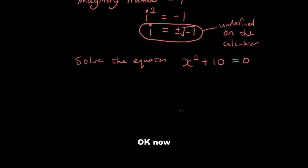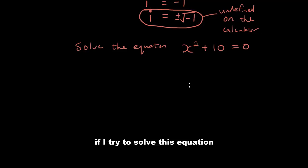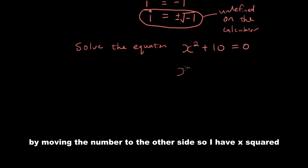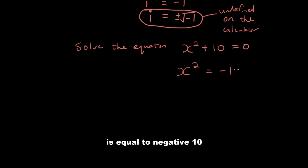Now, if I try to solve this equation by moving the number to the other side, so I have x squared is equal to negative 10.